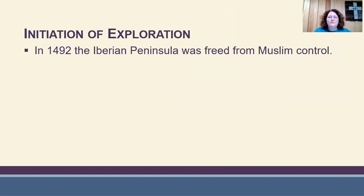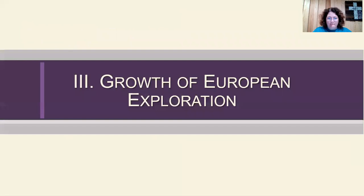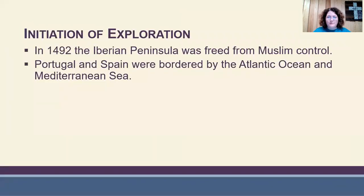In 1492, the Iberian Peninsula was freed from Muslim control. The Iberian Peninsula is the peninsula where Portugal and Spain are located, bordered by the Atlantic Ocean and the Mediterranean Sea. Therefore, they had a long history of shipbuilding and navigating these bodies of water. With access to the Atlantic Ocean, Spain sent explorers west and Portuguese sailors traveled south to find a new water route to the east.